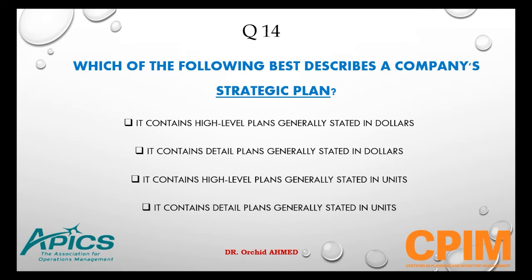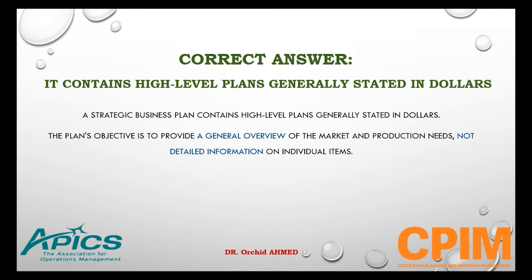Question number 14. Which of the following best describes a company's strategic plan? Options: high-level plan in dollars, detailed plan in dollars, high-level plan in units, or detailed plan in units. The right answer is it contains a high-level plan generally stated in dollars. The plan's objective is to provide a general overview of market and production needs, not detailed information on individual items.